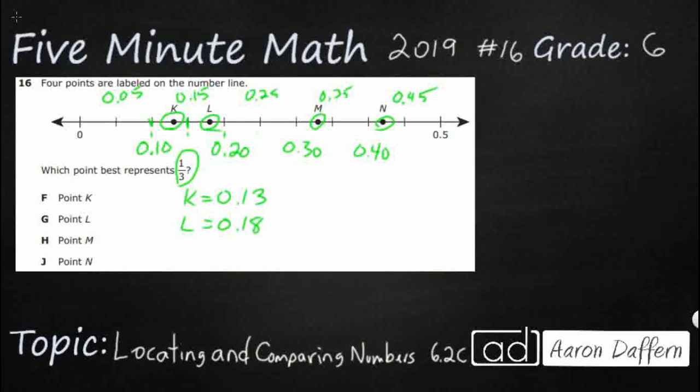And what about this point M? Point M is between point three and point three-five, kind of closer to point three-five, so I'm going to call it point three-three. And then N is going to be between point four and point four-five. Looks like it's closer to point four, so I'm going to call that point four-two.